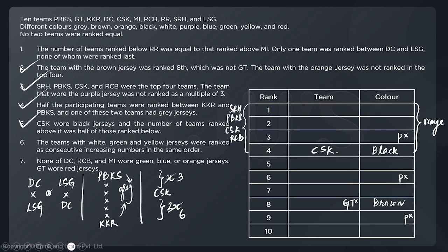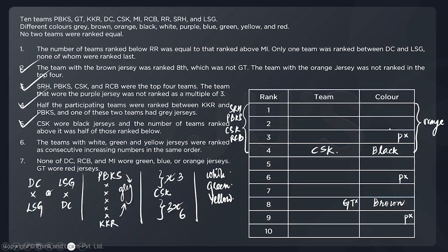Statement six: the teams with white, green, and yellow jerseys were ranked as consecutive increasing numbers in that order — so white, green, yellow must appear in three consecutive cells. Statement seven: none of DC, RCB, and MI wore green, blue, or orange jerseys, and GT wore a red jersey. We can't place anything definitive yet for DC or MI, so we leave statements one and seven for now.